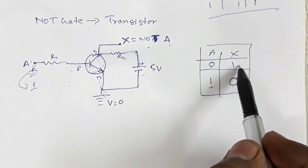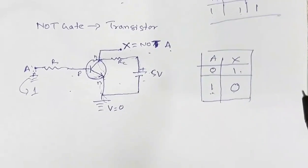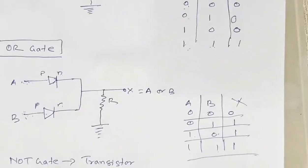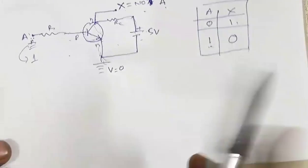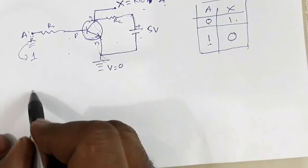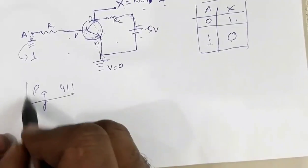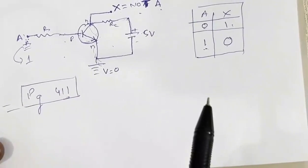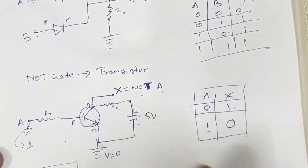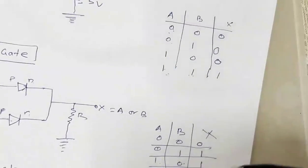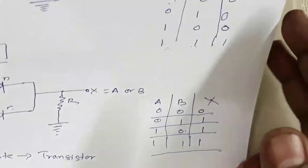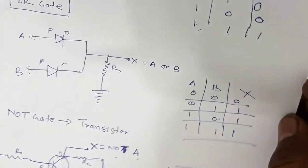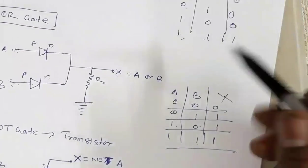This is the realization of the NOT gate with a transistor. For students preparing these three topics — realization of AND gate, OR gate, and NOT gate with transistor — you may refer to Concepts of Physics Volume 2, page number 411, where a beautiful explanation is given on these three topics. You can revise through this video as it will not take more than 10 to 15 minutes. Keeping the last few years' papers in mind, any one of these may come in the examination. Best of luck.